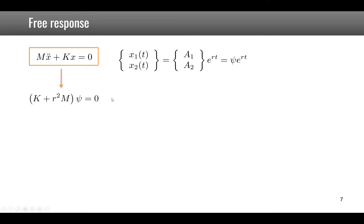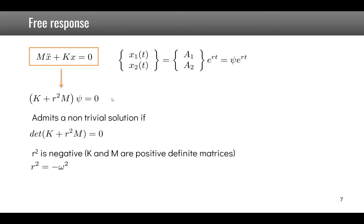From algebra, this set of equations admits a non-trivial, non-zero solution for psi only if the determinant of the matrix is zero. Because K and M are positive definite matrices, r-squared is negative, so we replace it by minus omega-squared. We now have to solve K minus omega-squared M times psi equals zero.